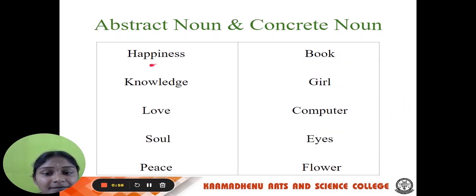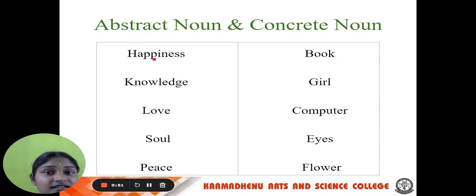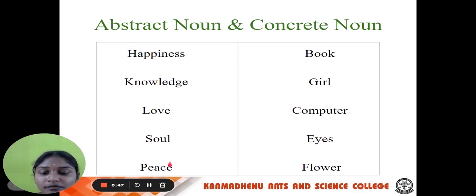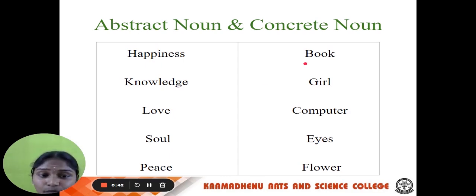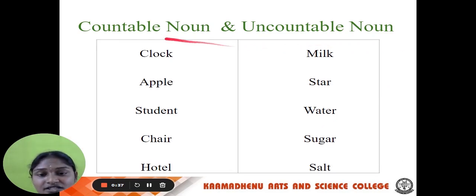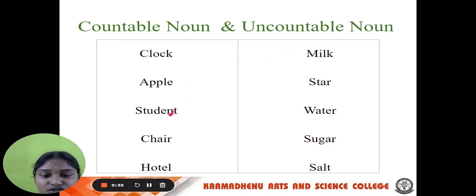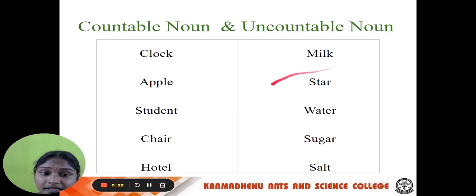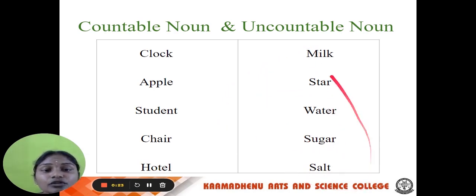Next, let us differentiate between abstract and concrete, and countable and uncountable. Abstract nouns — things we cannot see, hear or touch — for example: happiness, knowledge, love, soul, peace. Concrete nouns — things we can see, hear, touch, taste and smell — for example: book, girl, computer, ice and floor. Countable nouns: clock, apple, student, chair and hotel. Uncountable nouns: milk, stars, water and sugar — things we cannot count.